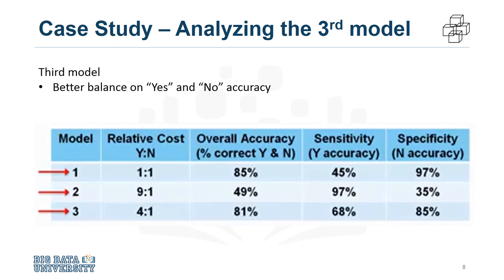For the third model, the relative cost was set at a more reasonable 4 to 1. This time, 68% accuracy was obtained on yes — called sensitivity by statisticians — and 85% accuracy on the no, called specificity, with an overall accuracy of 81%. This is the best balance that can be obtained with a rather small training set through adjusting the relative cost of misclassified yes and no outcomes parameter.